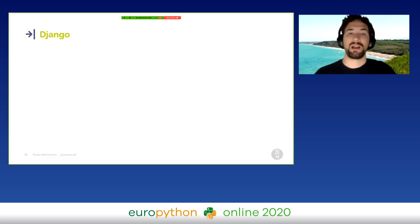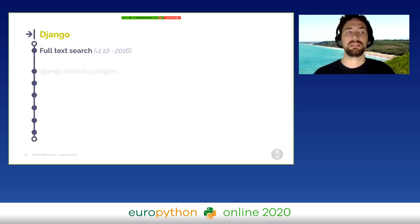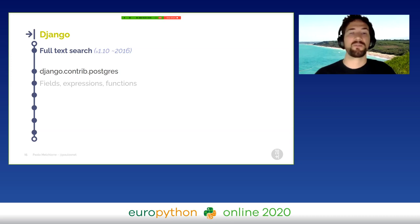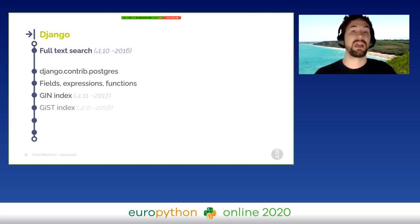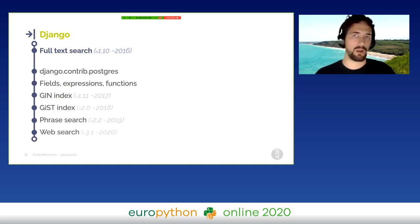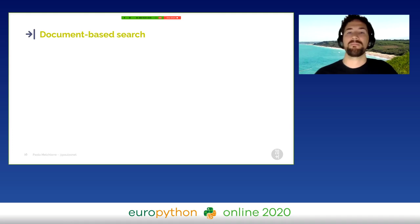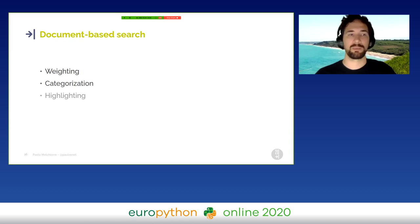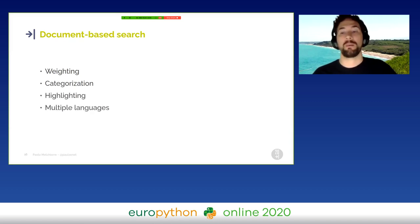Django is a very popular Python web framework. It added full-text search a few years ago in the django.contrib.postgres module, adding specific fields, expressions, and functions. Since then, many new useful features have been added every year until the last version, Django 3.1. The Django documentation defines document-based search as a full-text search with advanced features: weighting, categorization, highlighting, and multiple languages. We can implement all of them with Django itself.